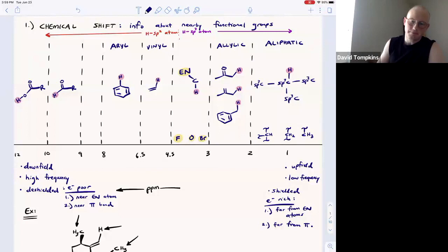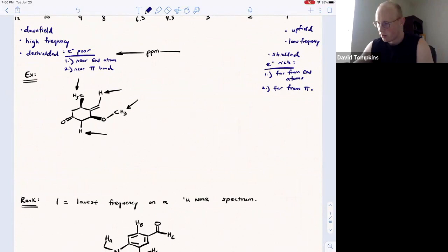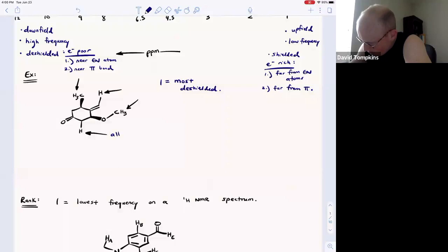Using chemical shifts, we are able to sort of piece together the functional groups to elucidate an unknown structure given an NMR spectrum. So it is important to know these ranges. A couple of example problems that you might see on an exam include the following, where I'm simply going to rank, number one being the most deshielded or the most downfield proton.